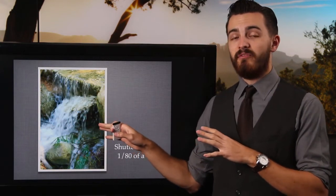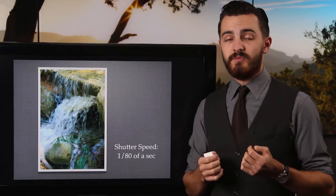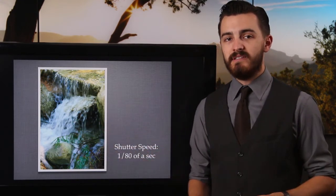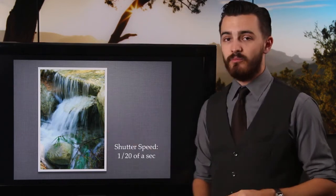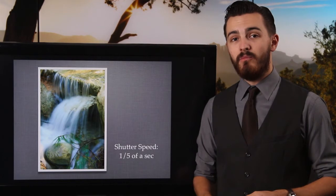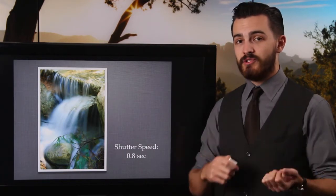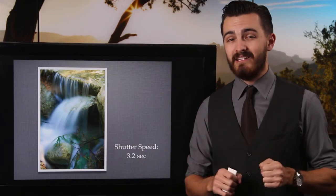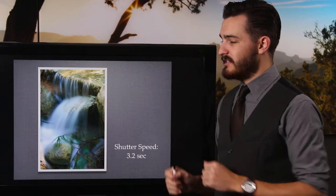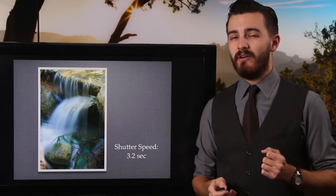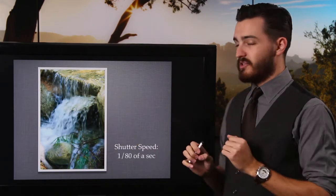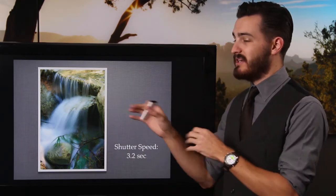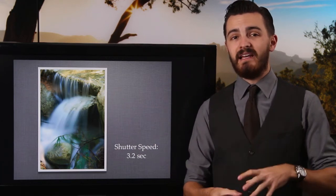Shutter speed has a great effect on moving water — anytime you're photographing a waterfall, controlling shutter speed can be very beneficial. Starting at one eightieth of a second, it freezes the water pretty well and we see a lot of water droplets. Slowing to one twentieth, we start to get a little streak. At one fifth, we get more streak. At 0.8 seconds, even more. And at 3.2 seconds, that's a very long exposure — no way to hold that still without a tripod. This longer shutter speed creates that misty, silky effect to the water that everyone wants.